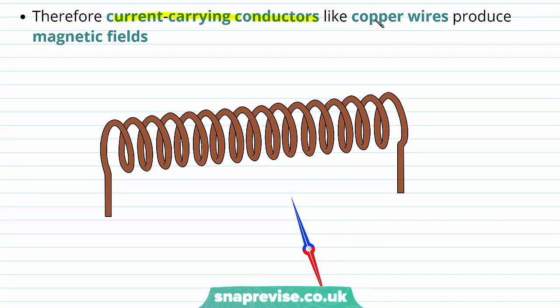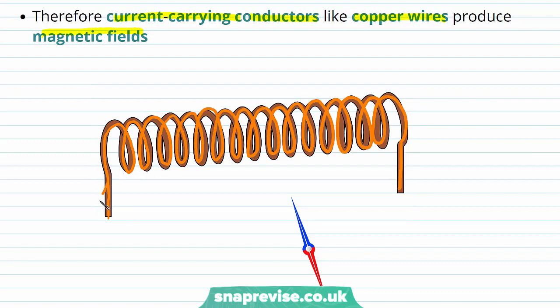And therefore, current carrying conductors like copper wires produce magnetic fields. So this copper wire is going to carry a current through all of its coils. Current is going to go in this way and out this way. And this will produce a magnetic field that will cause a compass to move.